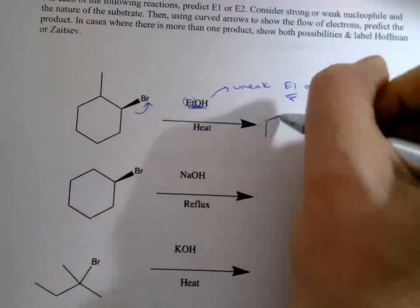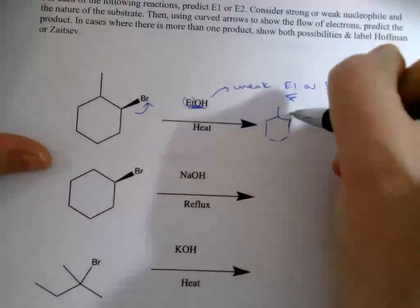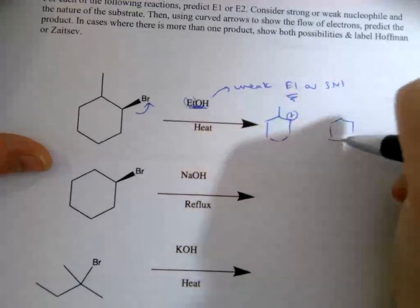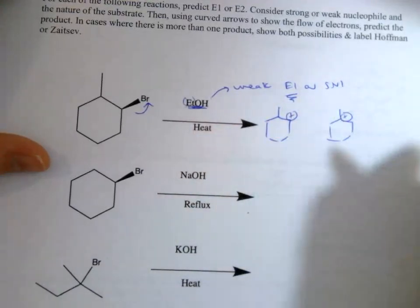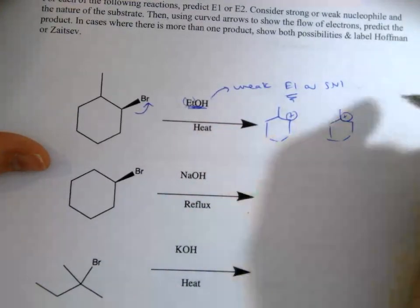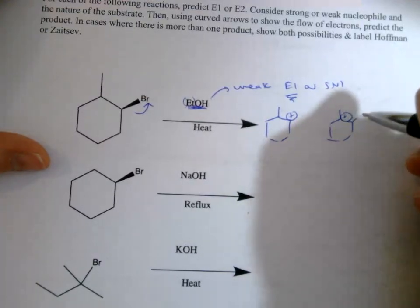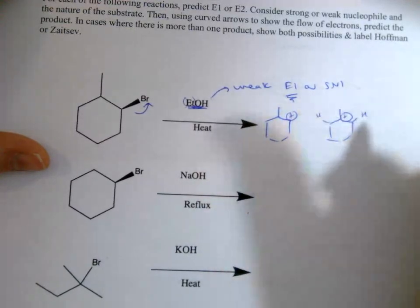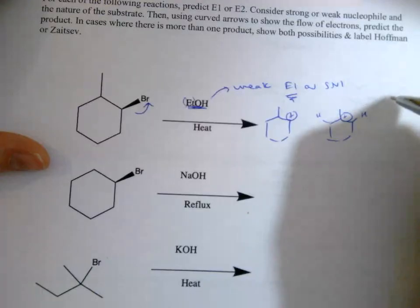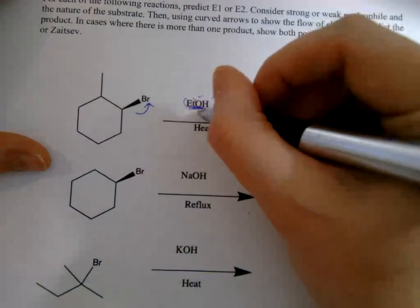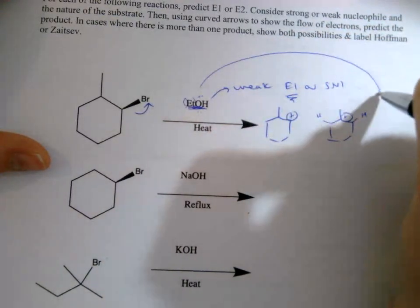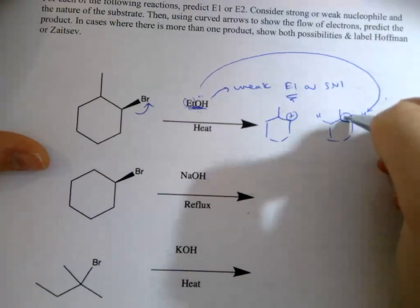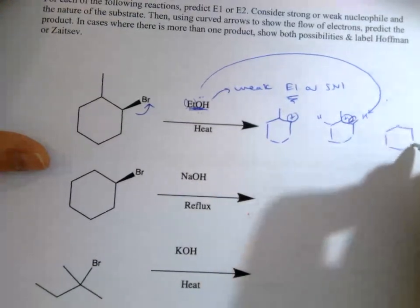The first step is the leaving group leaves and we will get a carbocation, and then that carbocation undergoes rearrangement. Then we look at either one of the beta hydrogens and the nucleophile of ethanol will take a beta hydrogen.